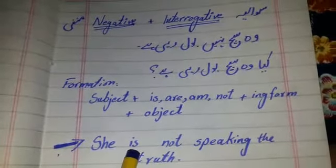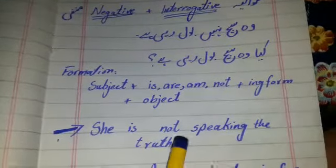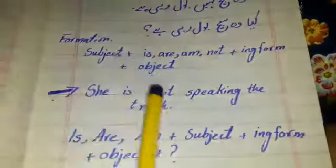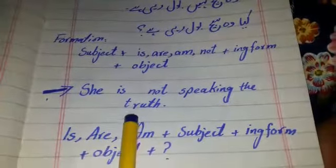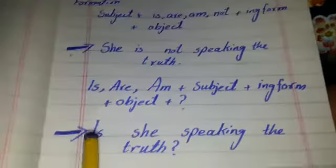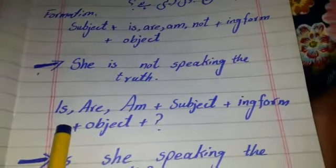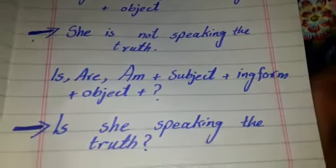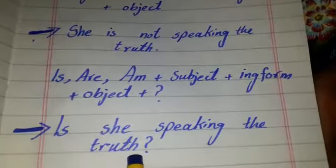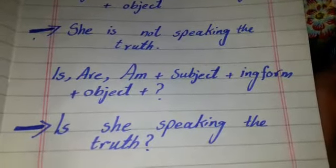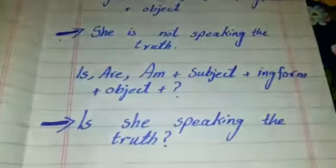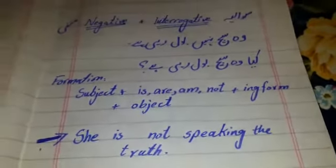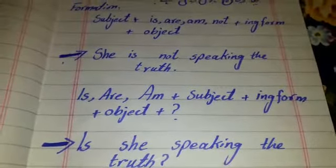Formation for negative: subject plus is/are/am plus not plus ing form plus object. 'Woh sach nahi bol rahi hai' — 'She is not speaking the truth.' For interrogative: is/are/am plus subject plus ing form plus object plus question mark. 'Kya woh sach bol rahi hai?' — 'Is she speaking the truth?' That is the formation and examples of negative and interrogative of present continuous tense.